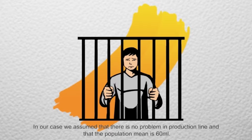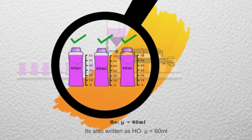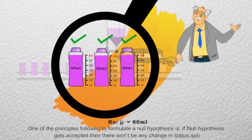In our case, we assumed that there is no problem in production line and the population mean is 60 ml. One of the principles followed in formulating a null hypothesis is: if null hypothesis gets accepted, then there won't be any change in status quo.